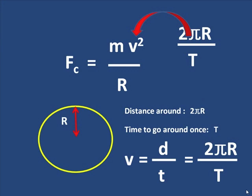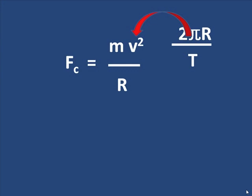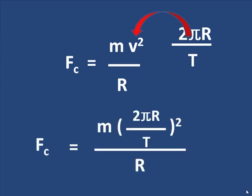And what I end up with is 2πr over T all squared. Now you should try this yourself with pen and paper and follow the steps through. But here's what I have. It's m times 2πr over T all squared. So when I square it, I get 4π² r² over T².